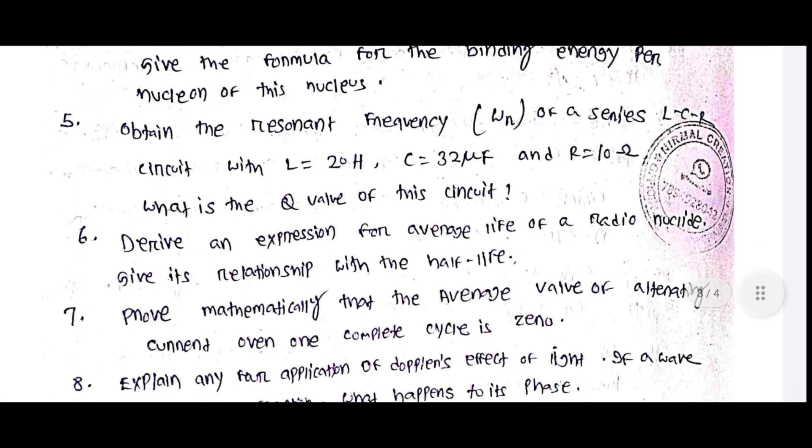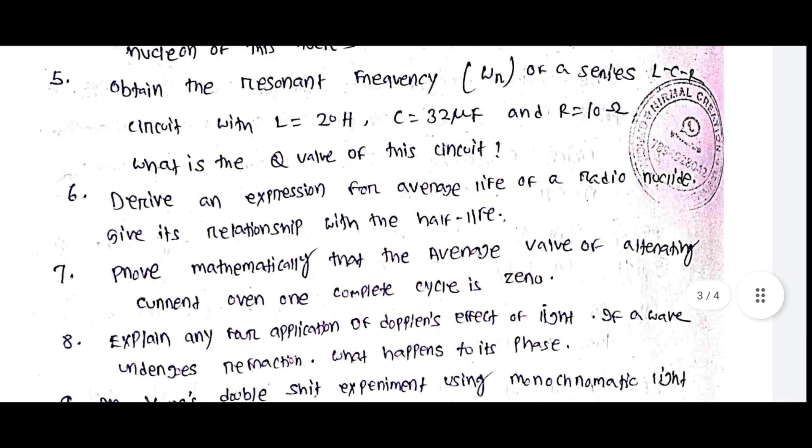Obtain the resonant frequency omega of a series LCR circuit with L equals 20 Henry, capacitor 32 microfarad and resistance 10 Ohm. What is the Q value of this circuit?